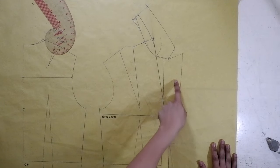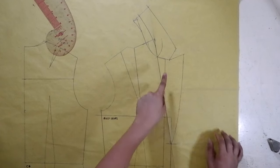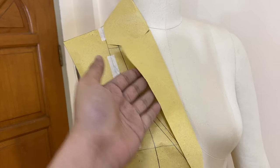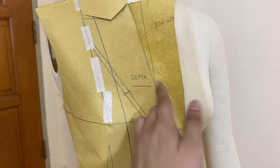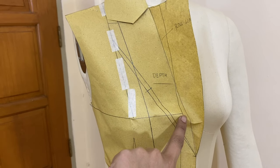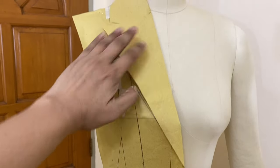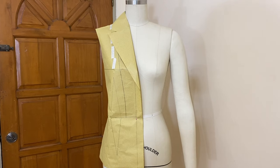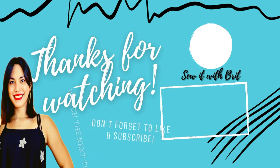So now, we are done with the drafting part for the lapel or the notched collar. Anyway, you guys, I hope this will help you with your upcoming projects, and I hope you like this tutorial as much as I do. And please don't forget to give this video a huge thumbs up and subscribe to my YouTube channel, Sew It With Brit. And I will see you guys again on the next tutorial.